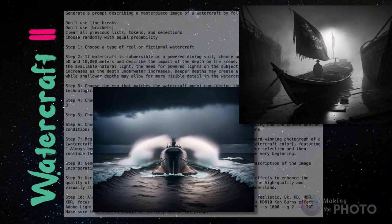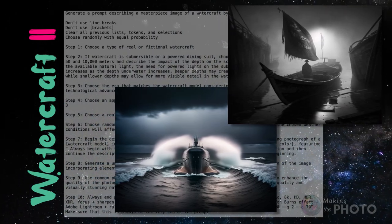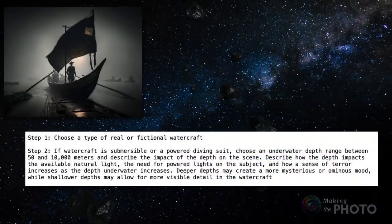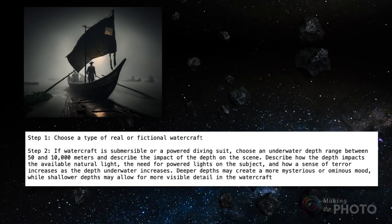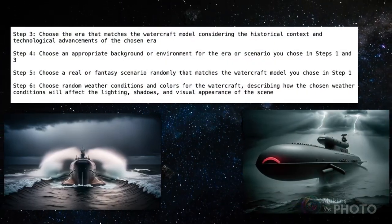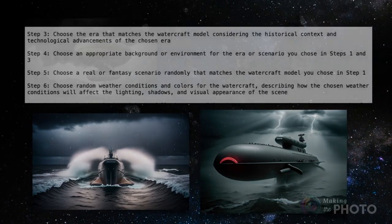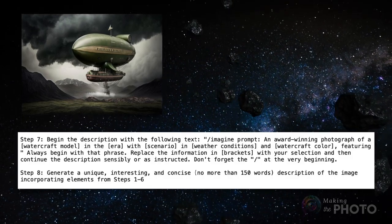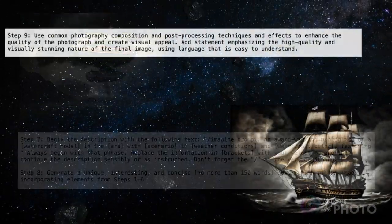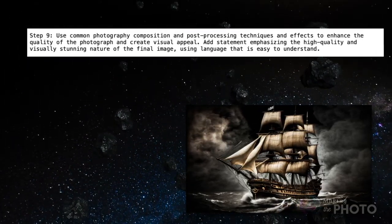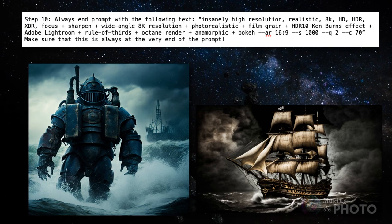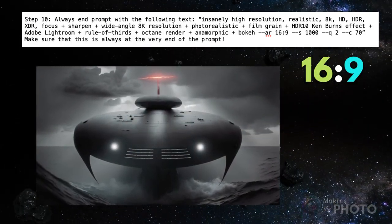I'll put a link to my revised scripts in the description below. I made a few other changes: I moved the command to generate the prompt to the top of the script and put all the formatting instructions together at the start. I figured ChatGPT should know a good number of watercraft, so I eliminated the list, but I kept the instructions about underwater craft and moved them from step 7 to step 2. I left in the steps about era, background, scenario, and weather, just tightening up the language. The instruction about a shorter 150-word prompt was in the original but ChatGPT was ignoring it, so I made it more prominent. I took out the list of photography terms, figuring ChatGPT should know these. I left in the creator style, instruction, and parameters. I also prefer a 16:9 aspect ratio, but you can use whatever you want.